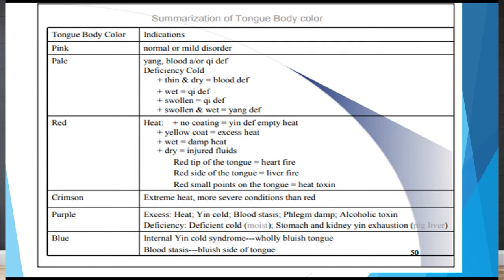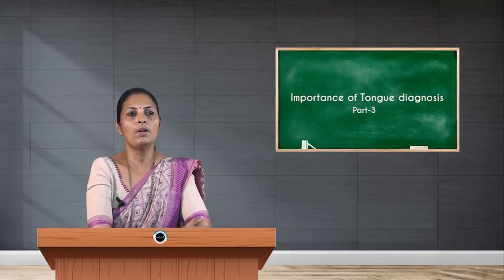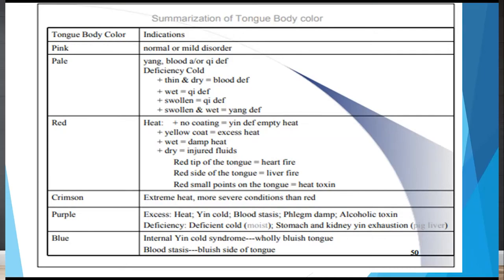A swollen and wet tongue indicates yang deficiency. To repeat: pale color reflects yang, blood, or qi deficiency. In deficiency of cold, the tongue is thin and dry for blood deficiency, wet for qi deficiency, and swollen for yang deficiency. A red tongue refers to heat; with no coating it indicates yin deficiency with heat, and with a yellow coat it indicates excess heat.